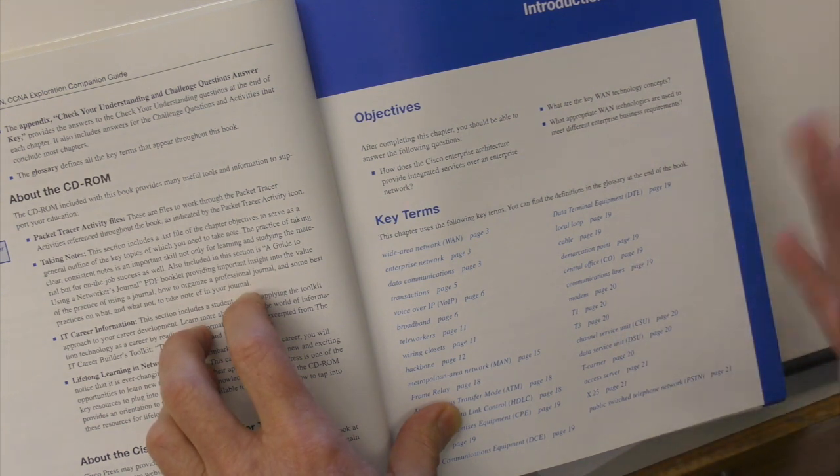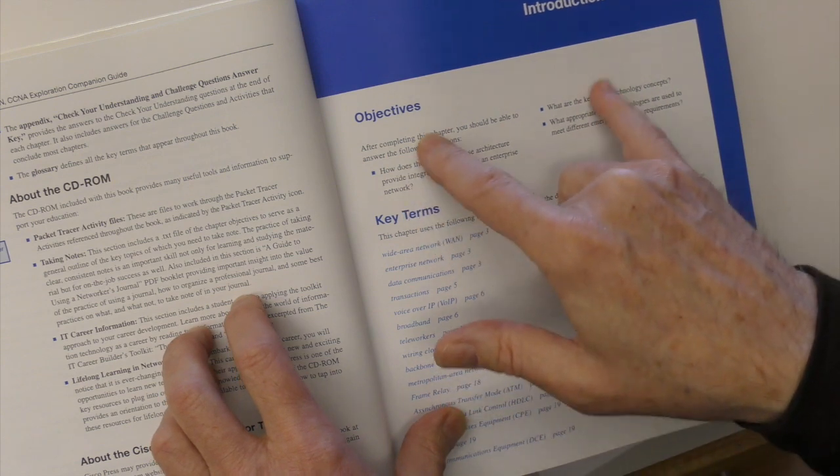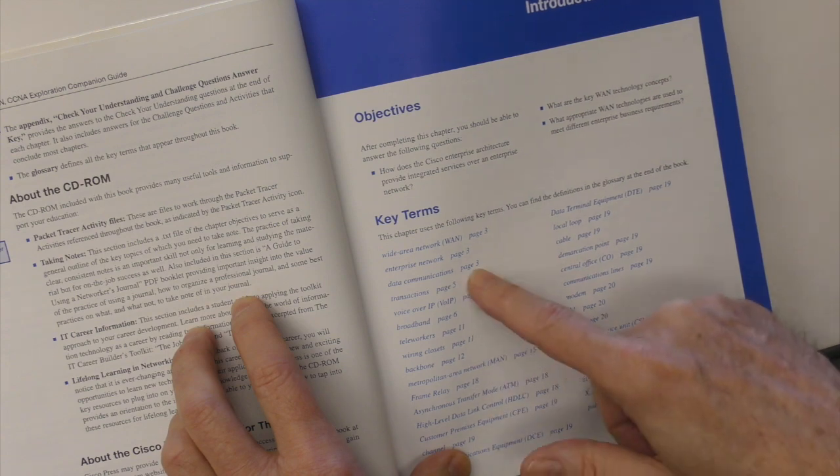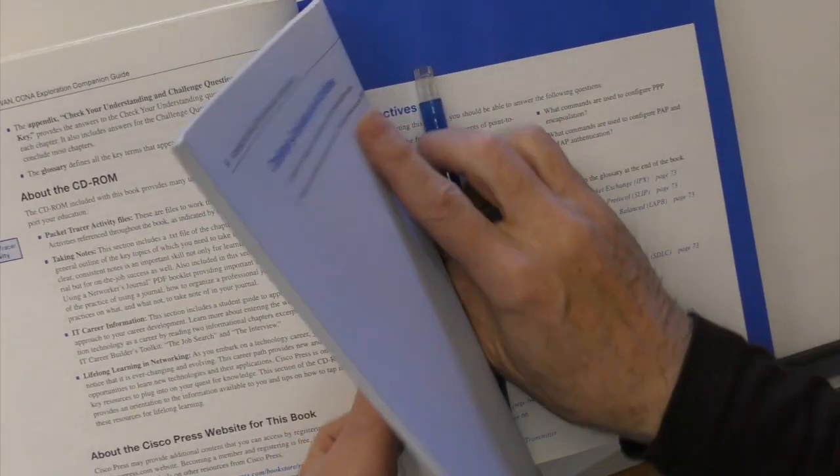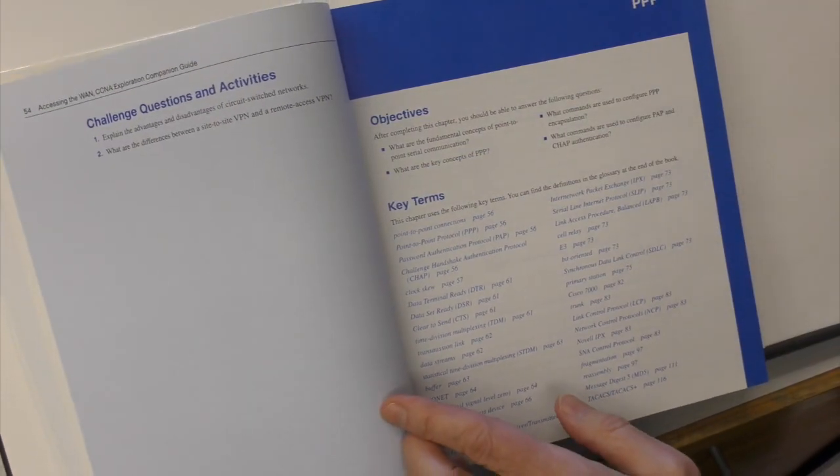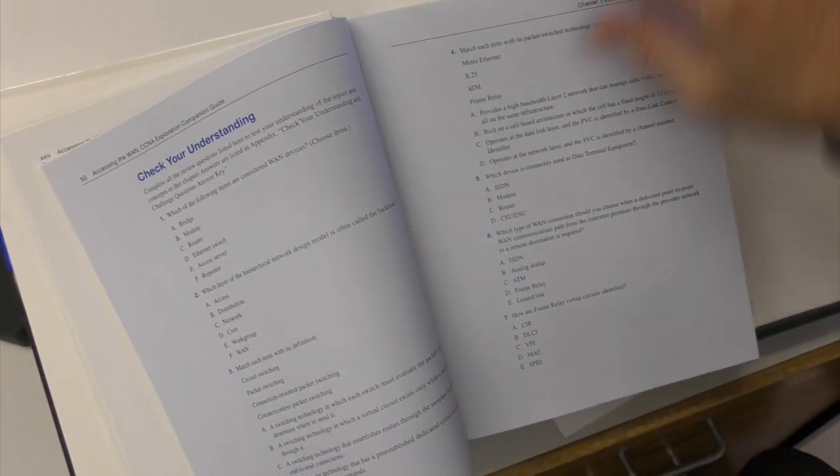First of all, let your brain know what's in the chapter. Notice that there are some objectives. You might just look at those briefly. Notice that there are key terms you can come back to with page references. A good thing to do is even go right to the end of the book and even notice that there are challenge questions.